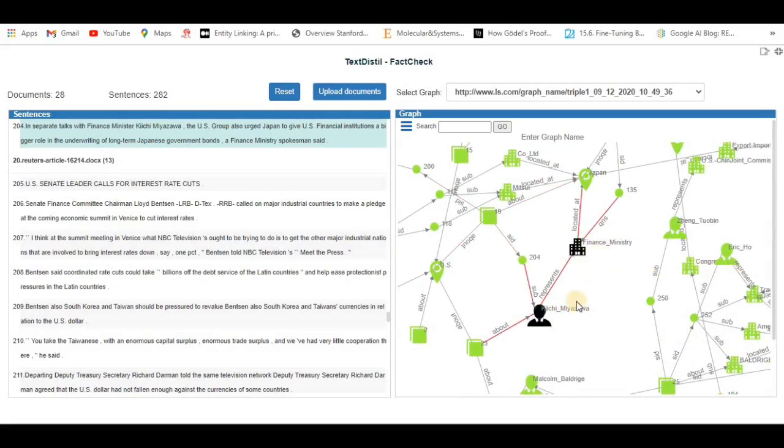Here the triple is Kiichi Miyazawa represents Finance Ministry and we can see if the highlighted text can be the basis of such a triple. We see Kiichi Miyazawa and it says Finance Minister and so that can be the basis for such a triple.